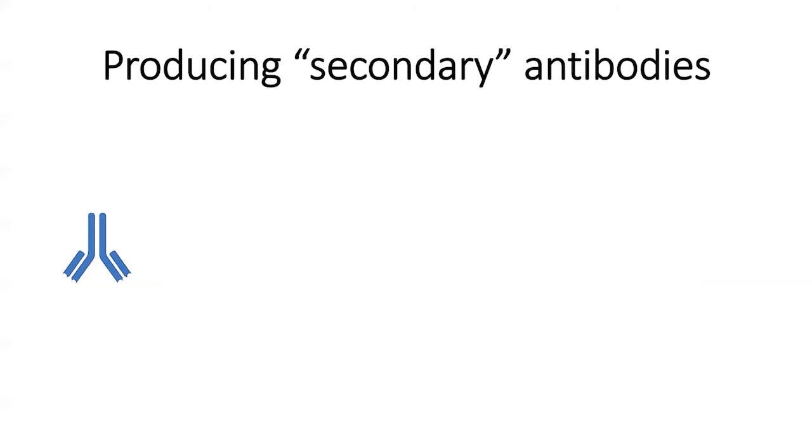So basically, the thing that sticks directly to our dopamine receptor target would be a primary antibody, made in goat in this example. And we would take a bunch of goat antibodies and have them be targeted by some other animal. So let's say we have goat antibodies, just general goat antibodies. We isolate them from goat blood. They don't have to be specifically dopamine receptor targeting. They can be just general goat antibodies.